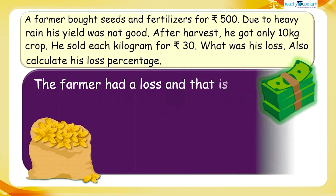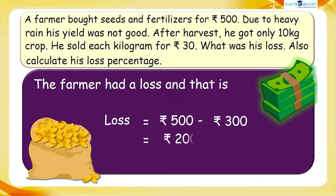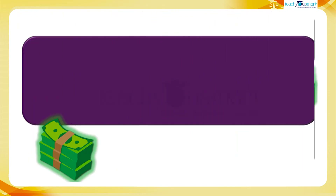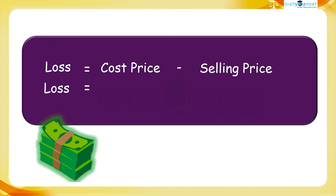We have to calculate the loss. Loss equals 500 rupees minus 300 rupees, which equals 200 rupees. Therefore, loss equals cost price minus selling price, or Loss = CP − SP.